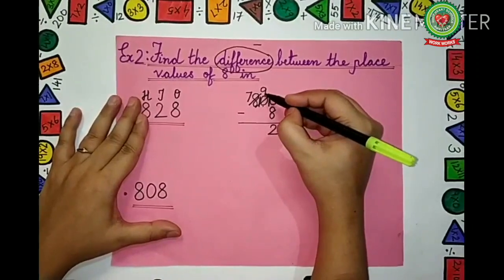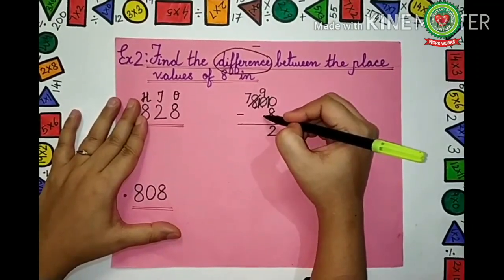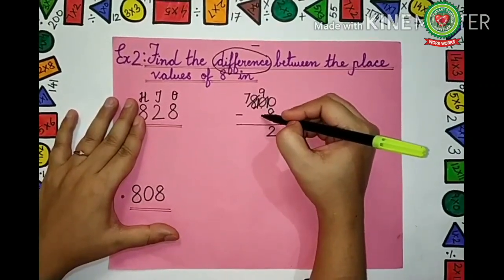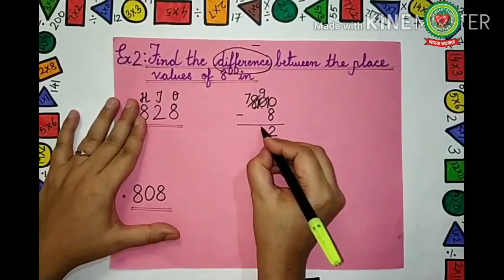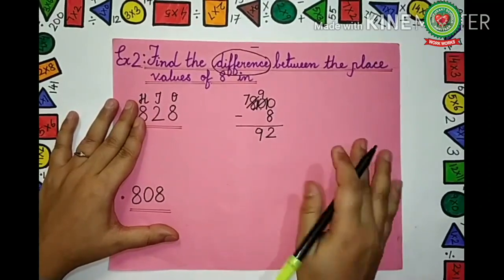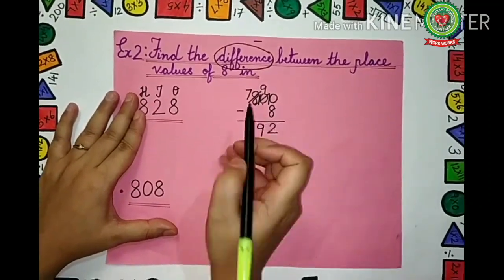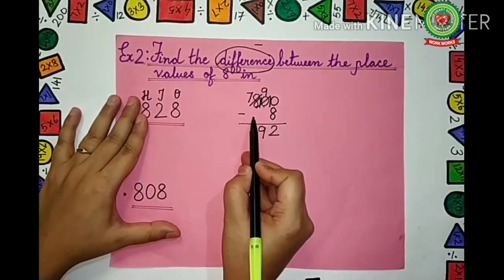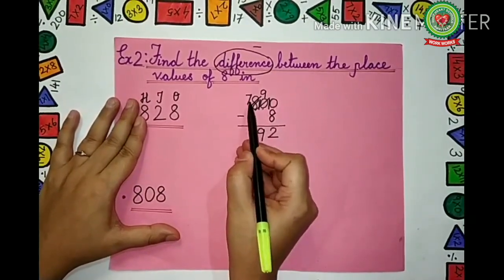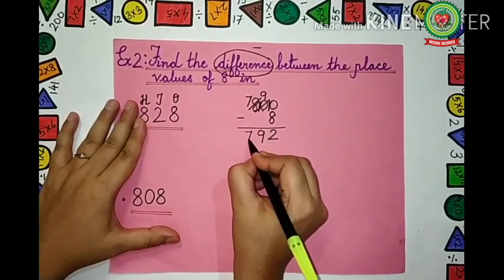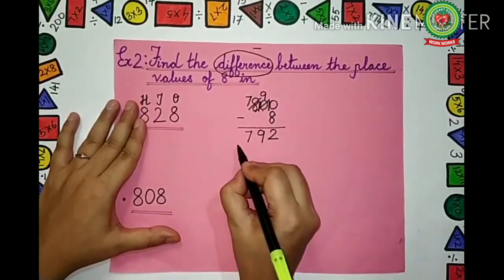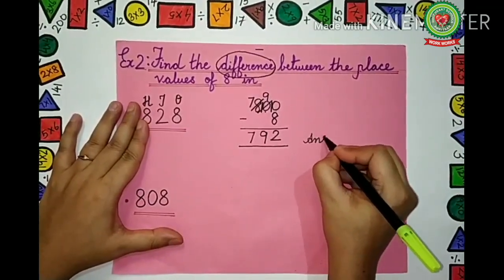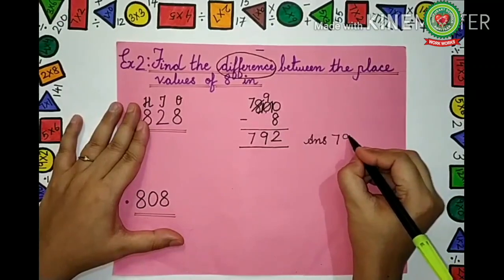9 is there and nothing is below — that means 9 minus 0 is 9. The next number is 7 and nothing is below it — that means 7 minus 0 is 7. So what is our answer? The answer is 792.